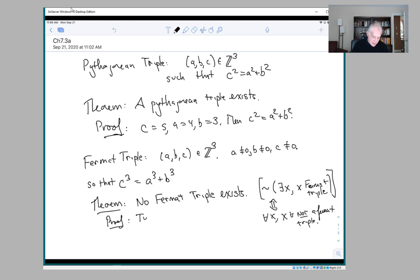That is to say, you assume it does exist. So you assume a, b, c satisfies c cubed equals a cubed plus b cubed, and you eventually deduce a contradiction.